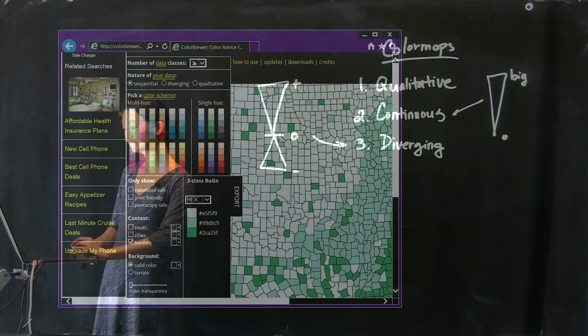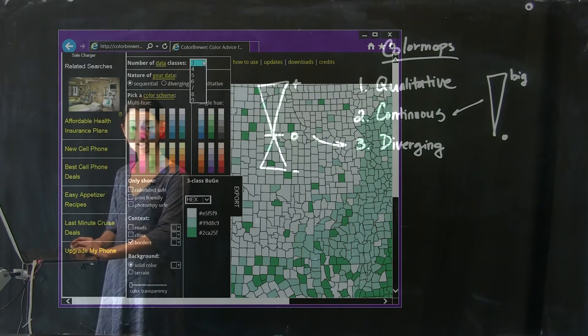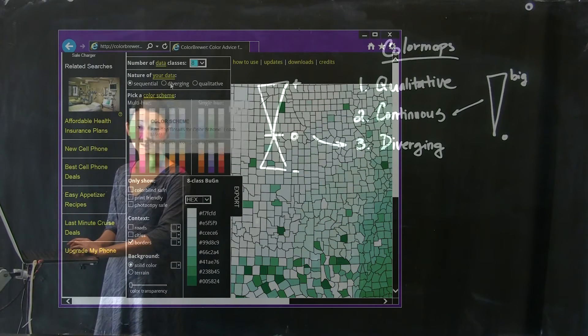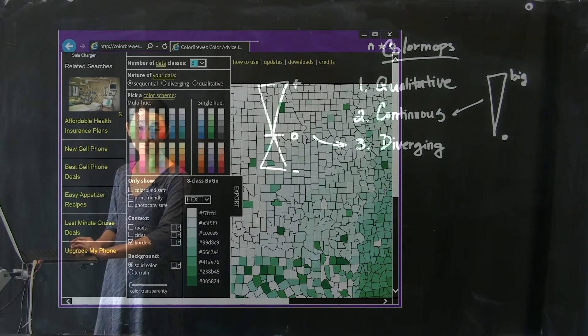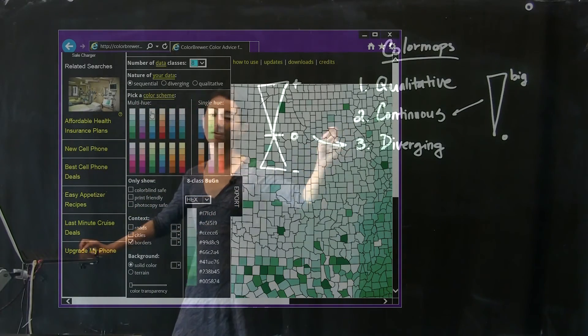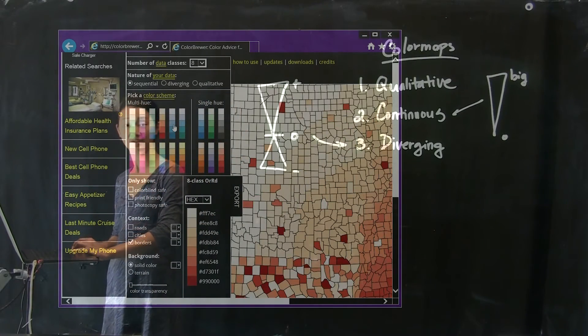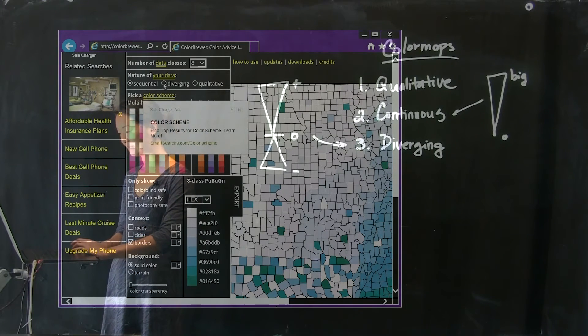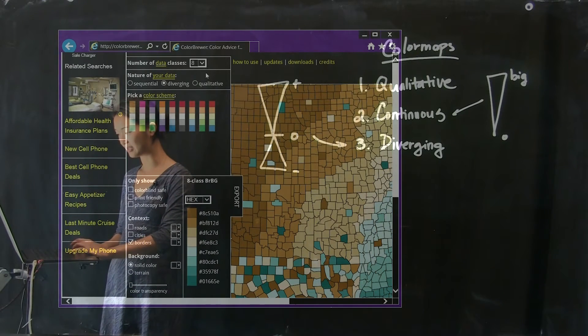What you can do is you can tell the number of classes you want—let's say I want nine classes, eight classes—and I want sequential, which is what I call continuous here. You can pick your different color schemes, or you can pick diverging, and notice all of these are of the flavor that I talked about. For example, this one: the pale yellow is in the middle, and really positive is red, and really negative is blue.